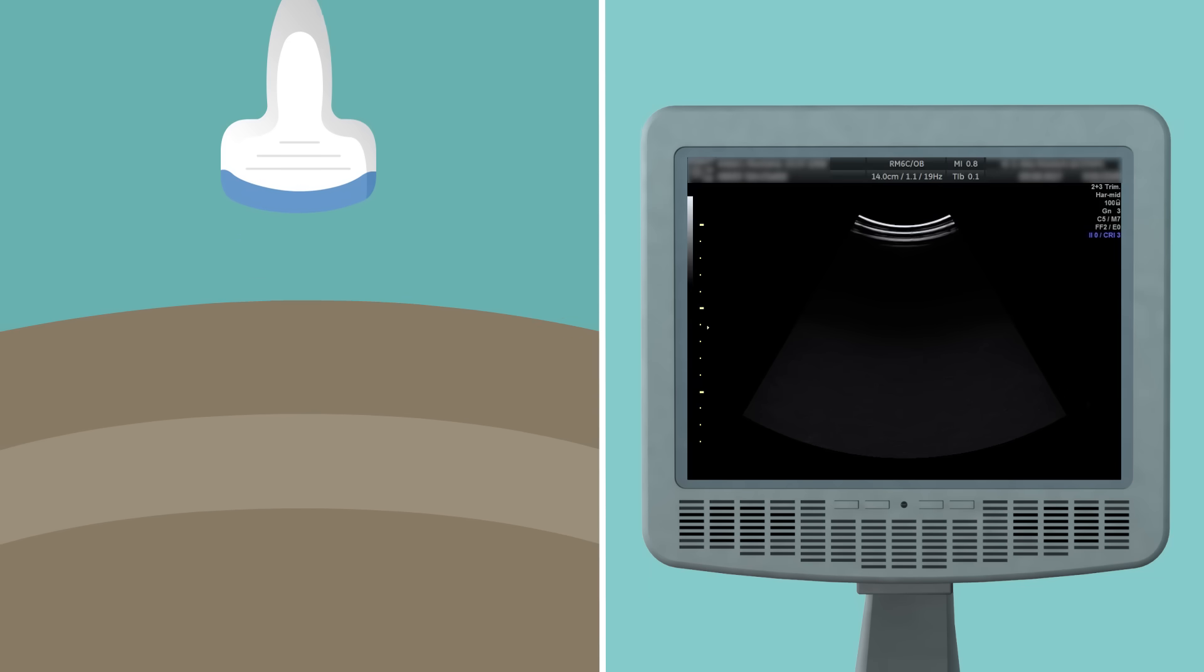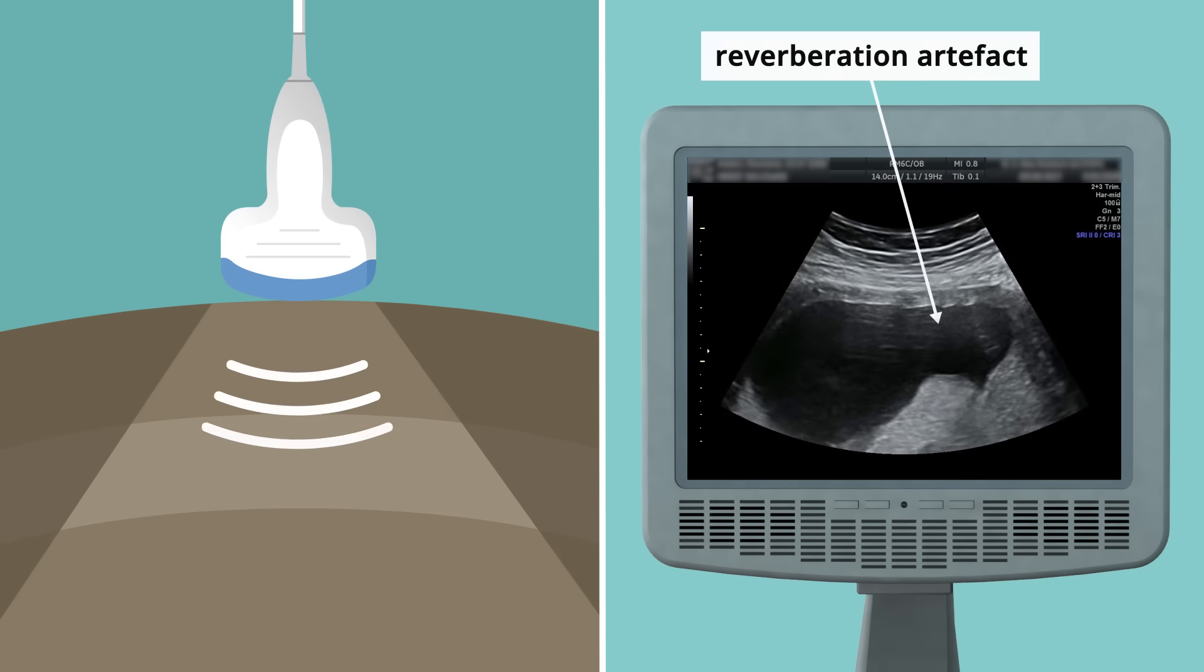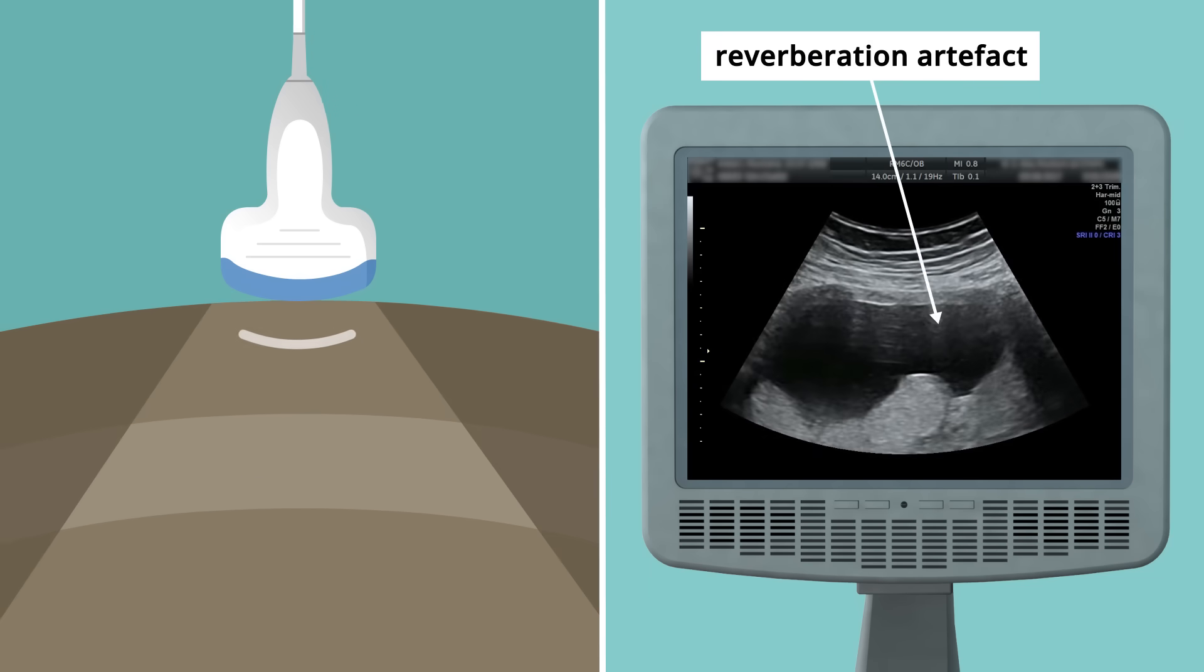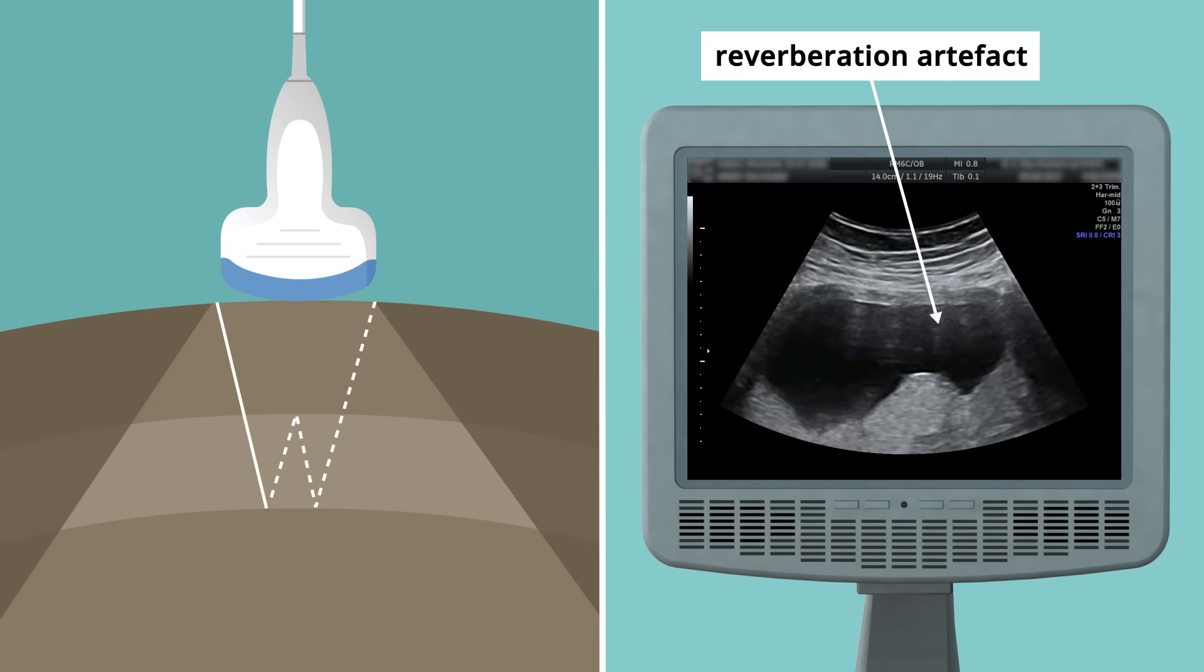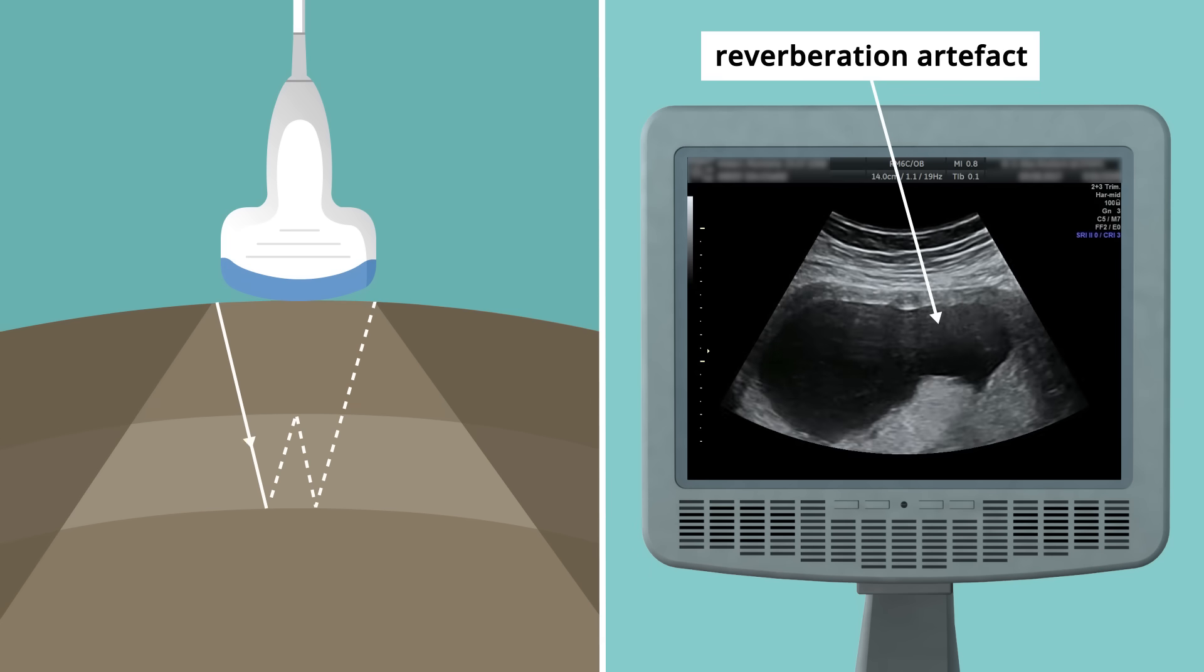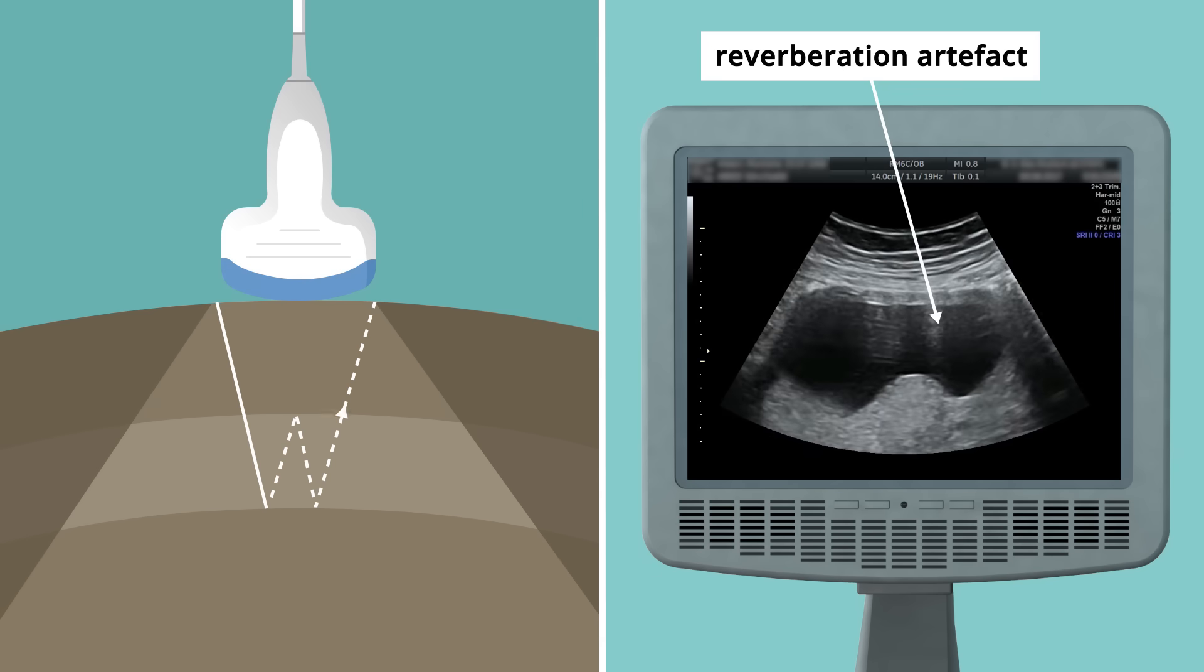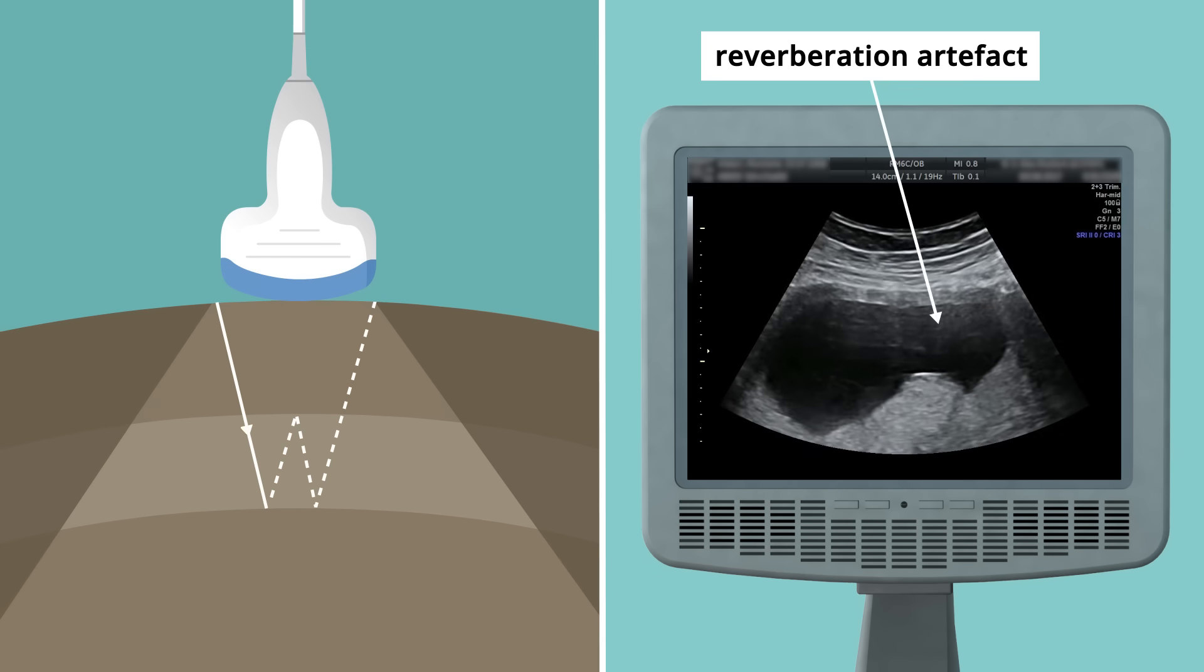A reverberation artifact can happen when the ultrasound signal becomes trapped between two layers which act as reflectors, bouncing the signal between them. This results in the reverberation echo appearing to be a falsely deeper structure since the returning echo takes longer to return to the probe.